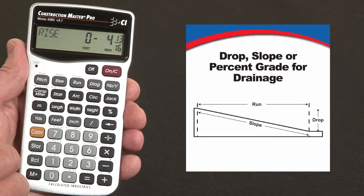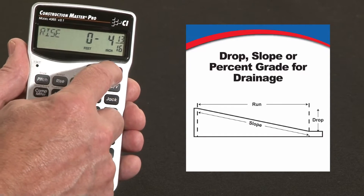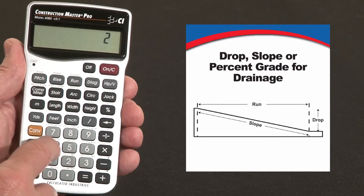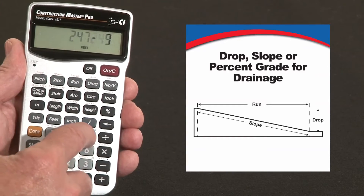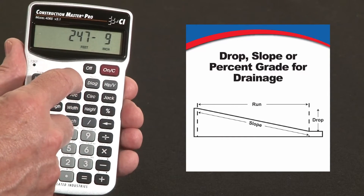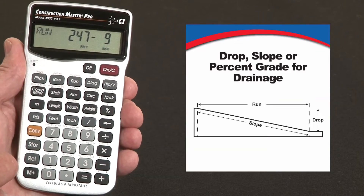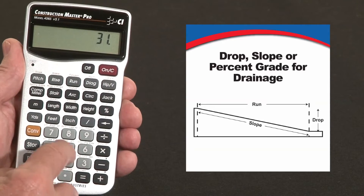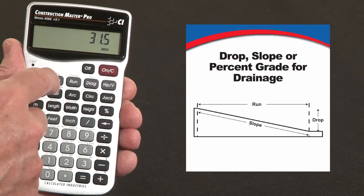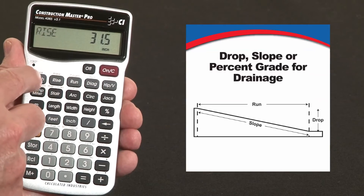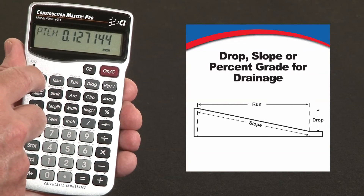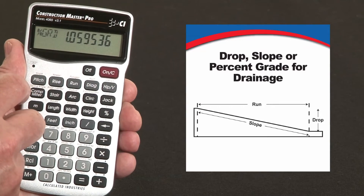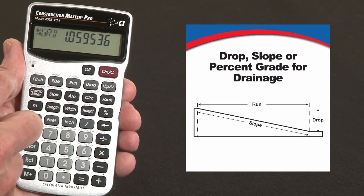Another situation: maybe you want to determine the percent grade or slope. You've got a lot and you want to find out if it'll drain properly the way it's contoured today. Say it's 247 feet 9 inches across — we'll call that the run. And you've taken a shot with your level and find it's 31.5 inches lower at the far end; that's our vertical change or rise. Now we calculate the pitch or percent grade. The degrees is 0.61 degrees and it's a 1.06 percent grade.